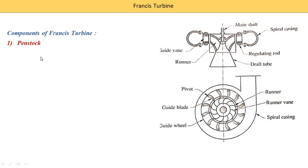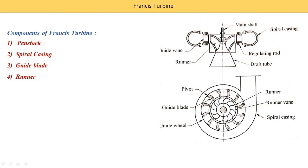First is the penstock — not shown in this image but water inlet comes from the penstock. Second is the spiral casing — in the top view and front view, this part is known as the spiral casing. Third is the guide blade — visible on both sides in the front view and in the top view. Fourth is the runner, which is mounted on the shaft. Fifth component is the draft tube. We will understand each component in detail.